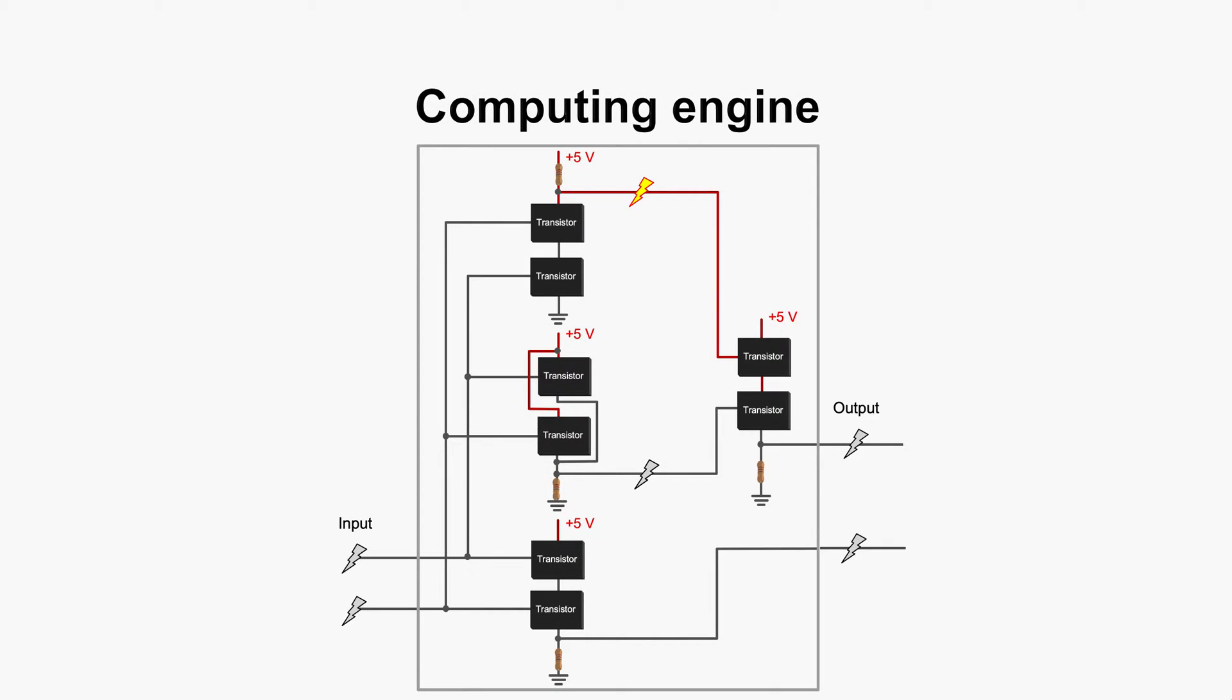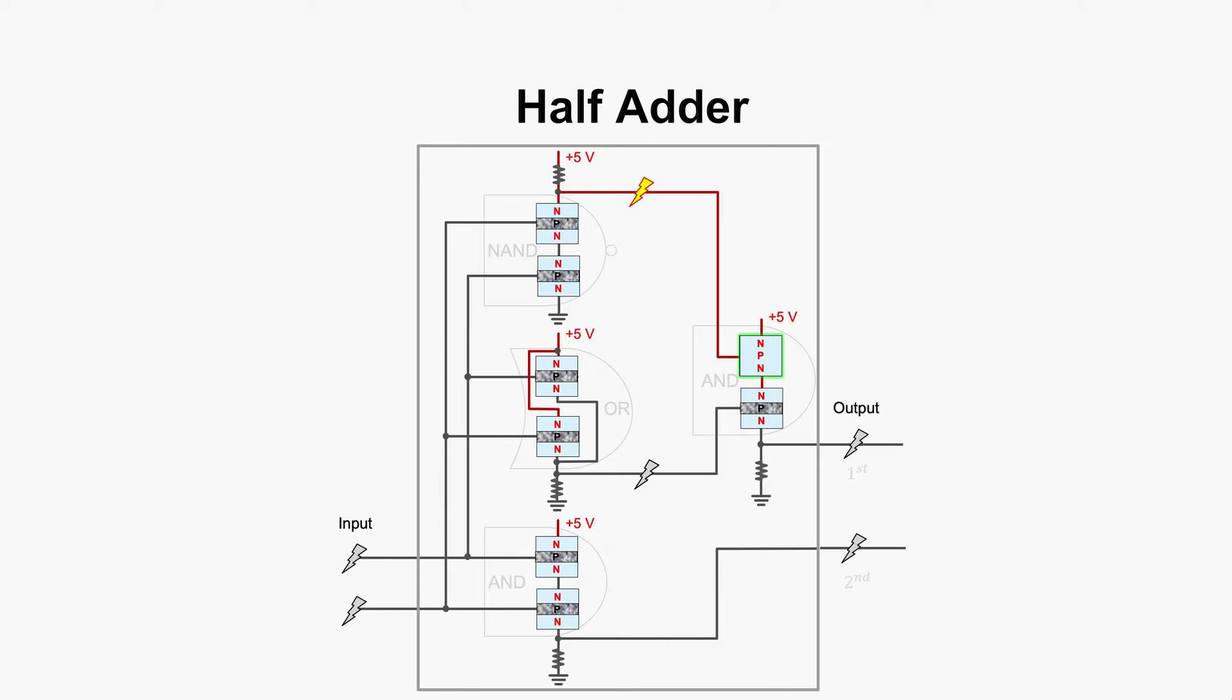We then made a half adder as the building blocks for computing in computers. To add 1 plus 1, we strike both inputs with high voltages, turning on the second wire. Here is the result 1 0, binary form of 2. Then we have to think about how to store this result.